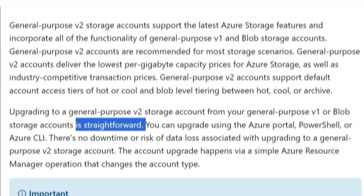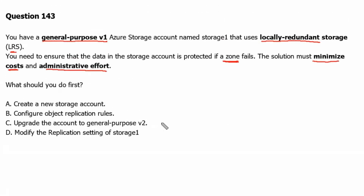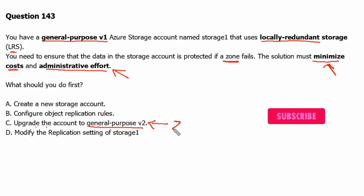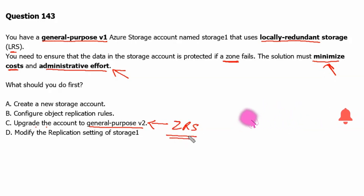Back to the question. Therefore, the best option available to us is option C, which is to upgrade the account to general purpose v2. It is really easy to upgrade the account and that would minimize the cost as well. Furthermore, ZRS or zone redundant storage option is then available to protect against zone failures at minimum prices.